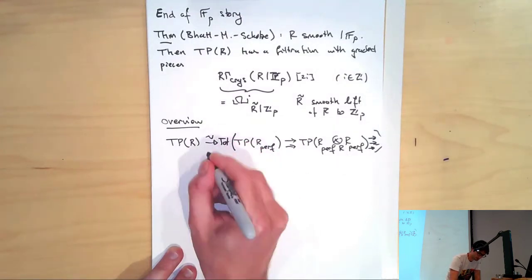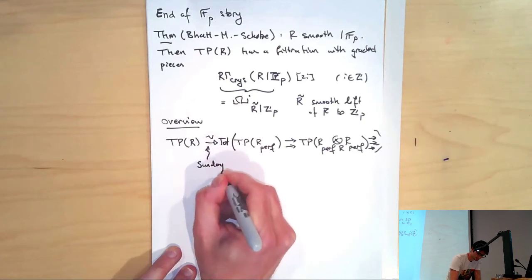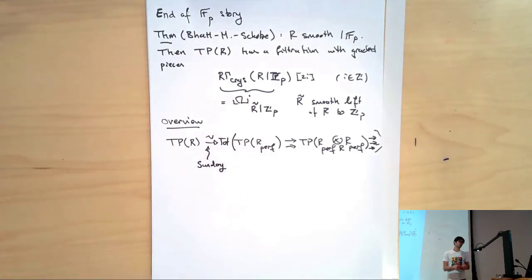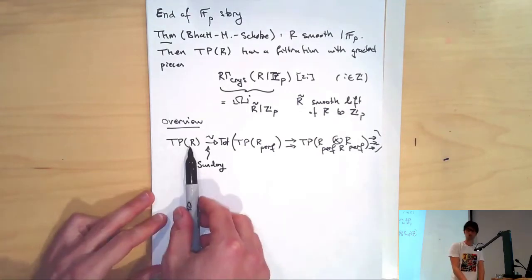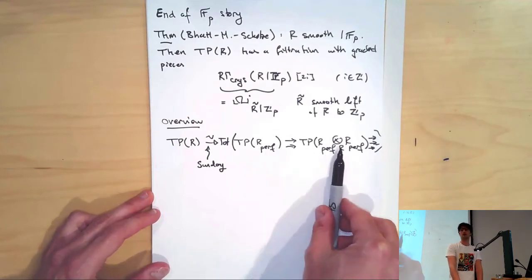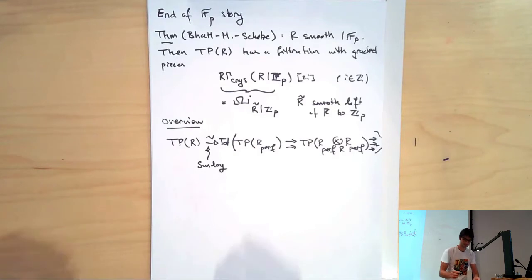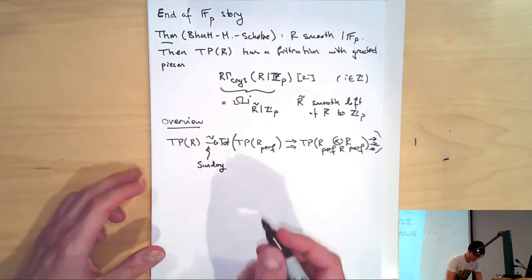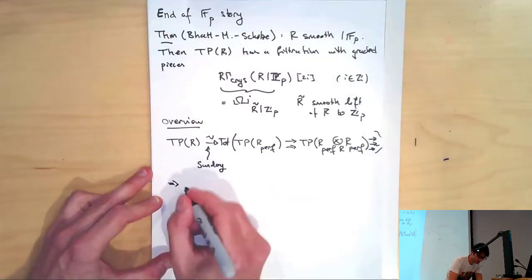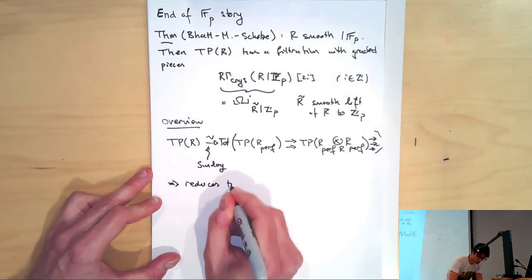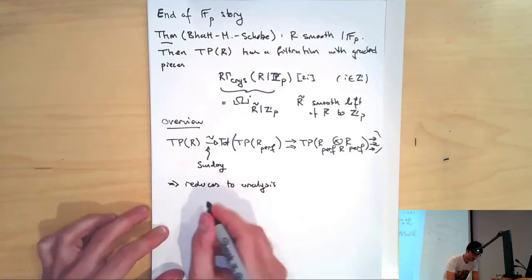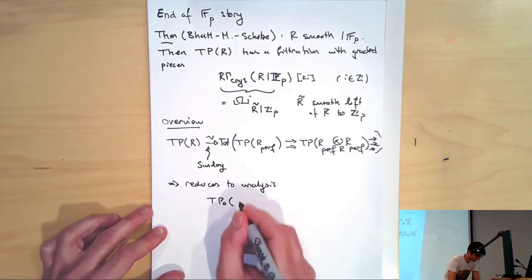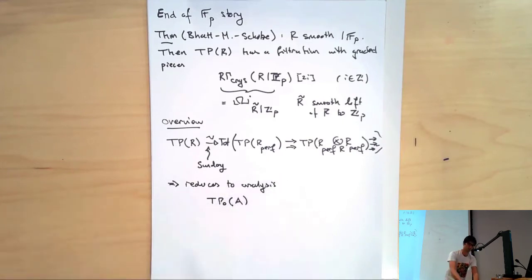Where I'm going to totalize this — just as on Sunday, we saw that all our theories like Hochschild homology and periodic cyclic homology and all the variants satisfy a property of flat descent. That lets me describe their values on smooth things in terms of their behavior on quasi-regular semi-perfect rings. So to understand the smooth case, everything reduces to analysis of TP on these quasi-regular semi-perfect rings, and in particular understanding their TP in degree zero.